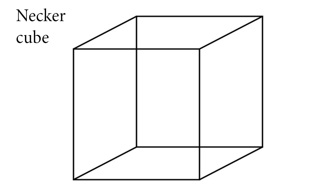The aforementioned Necker cube, now shown in its entirety, is an example of an ambiguous stimulus that results in a bi-stable image — bi-stable meaning that there tend to be two percepts that a person can flip between. The flipping can be somewhat random, although it can be encouraged depending on what part of the figure you're looking at.